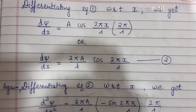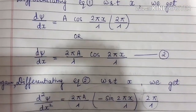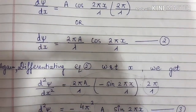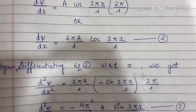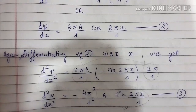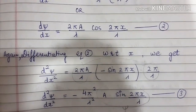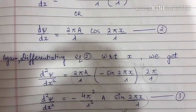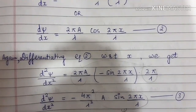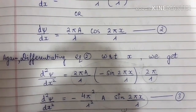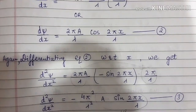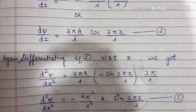Again, differentiating equation 2 with respect to x, we get d squared psi upon dx squared equal to 2 pi A upon lambda, multiplied by negative sine of 2 pi x upon lambda, multiplied by 2 pi upon lambda. This becomes our equation number 3.